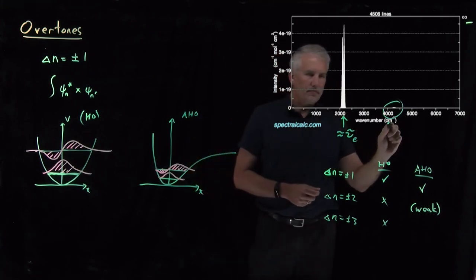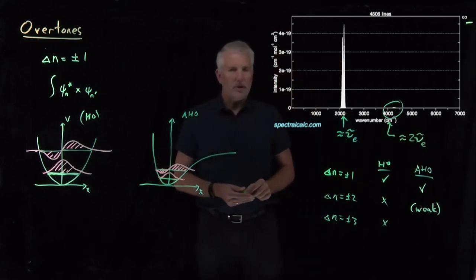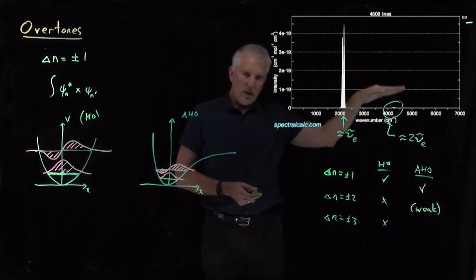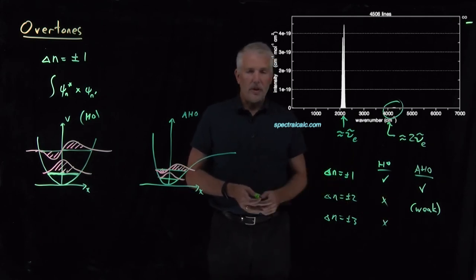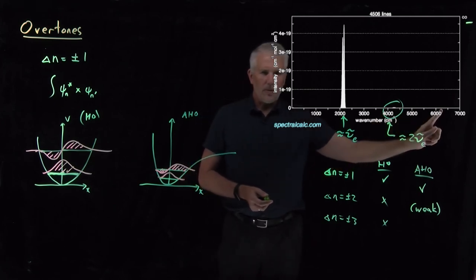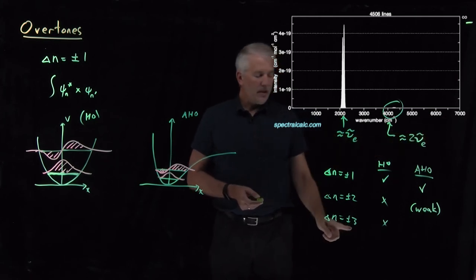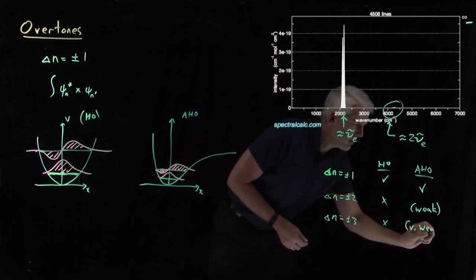So this absorption comes at roughly twice the fundamental vibrational frequency. Again, red shifted by a little bit because of the anharmonicity, much weaker in intensity because the integrals are small, but they're not completely zero. So there is some weak absorption there. We could look a little further out at a little above 6,000. And in fact, if we zoomed in here, we'd see even weaker absorption out here at plus or minus three times the vibrational frequency. So that becomes quite a bit weaker.